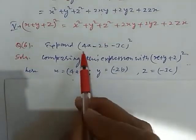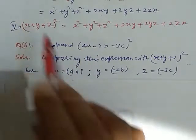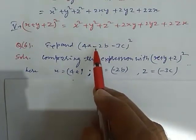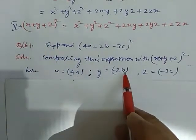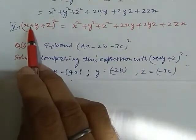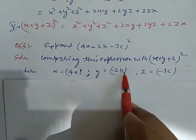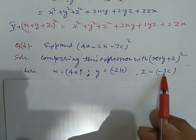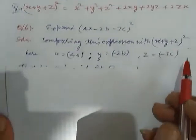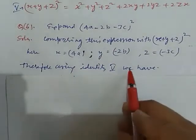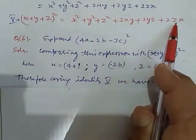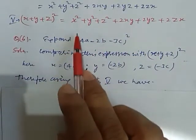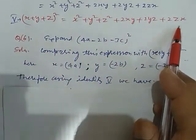So, first we compare here. 4a is as x, so we can write x equal to 4a. Now, here minus 2b — this complete term with this sign we write as y. y equal to minus 2b. Because we compare this which having plus sign, here negative sign, so with the sign we place here. z equal to minus 3c, because this z and this is minus 3c. So, we just write in place of z, we write minus 3c. Therefore, using identity fifth, this is our identity fifth.